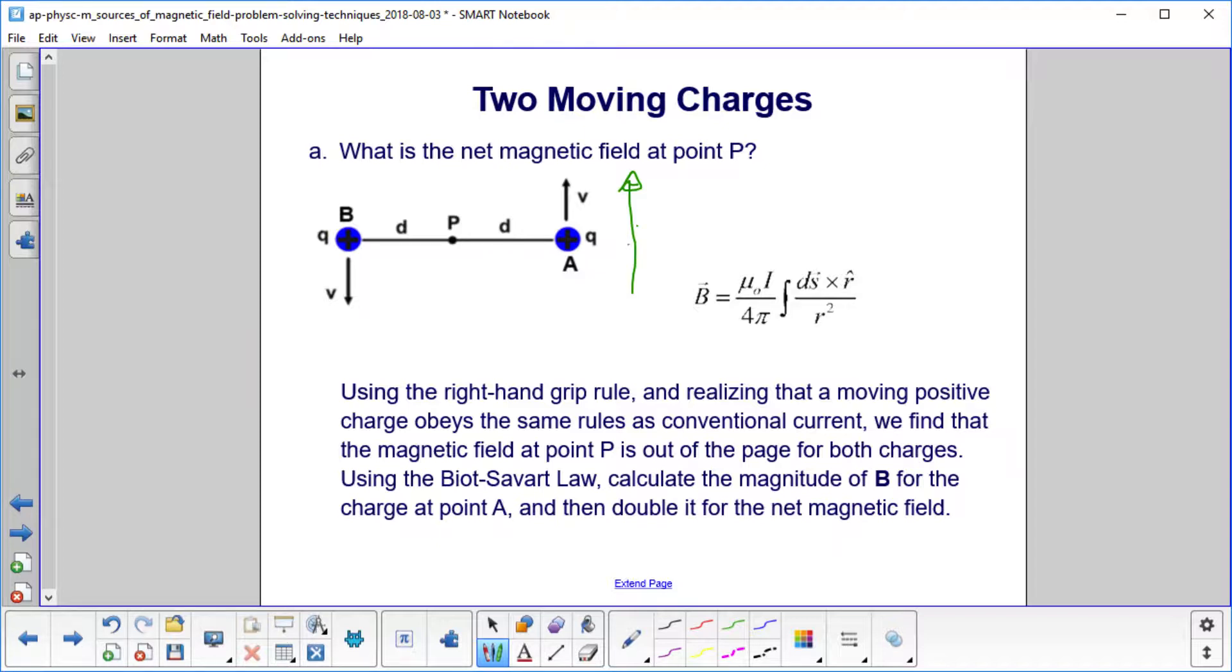So when you align your thumb in that direction and curl your fingers to the right, you'll find that the magnetic field here is into the page, and on this side it would be out of the page. Then you go ahead and do it for the charge at point B, and you should find the same thing. So the magnetic field is out of the page at point P.